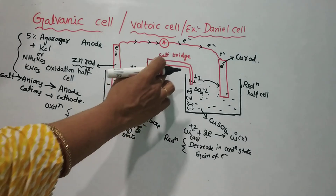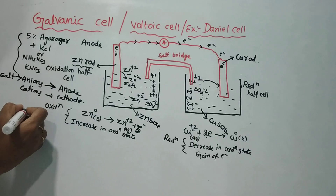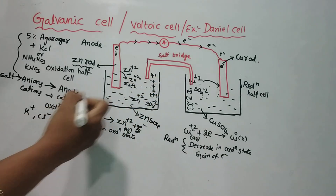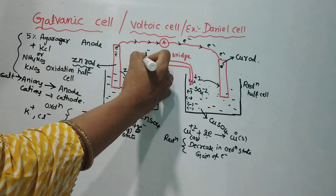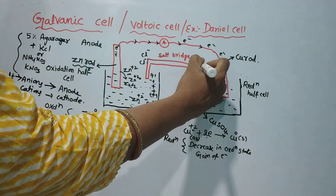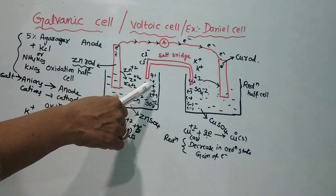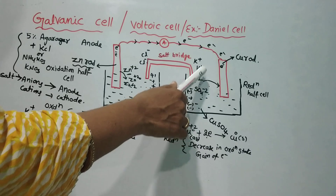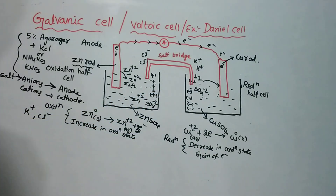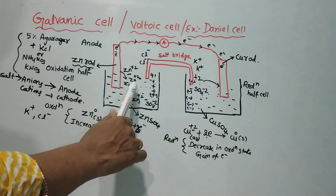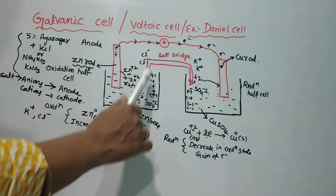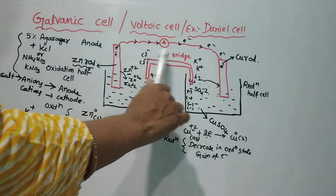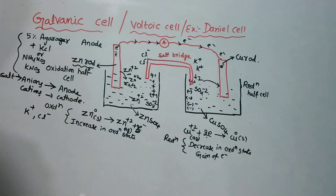For example, if the salt is KCl, it dissociates into K⁺ and Cl⁻ ions. When placed in the circuit, potassium ions and chloride ions migrate to balance the charges. The extra positive charge in one cell decreases and the negative charge in the other decreases. This is how the salt bridge maintains electrical neutrality.